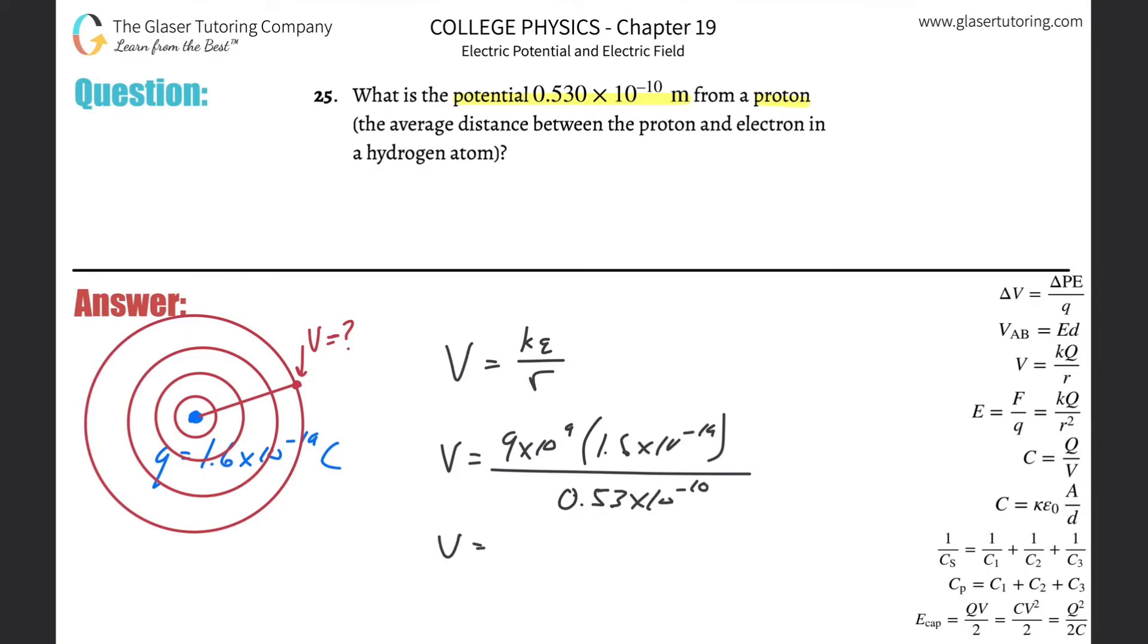Just throw it into the calculator: 9 × 10^9 multiplied by 1.6 × 10^-19, divided by 0.53 × 10^-10, and we get a voltage of...